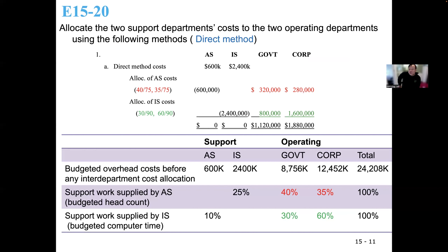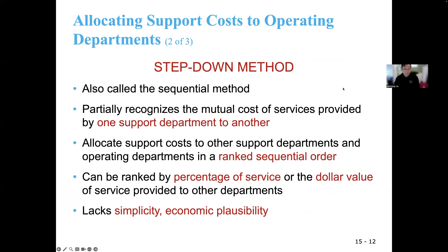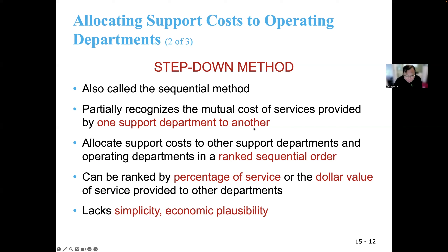This direct method is straightforward and simple to apply. The second approach is called the step-down method, also called the sequential method. The idea is we partially recognize the mutual cost of service provided by one support department to the other. You allocate support cost in a ranked sequential order. This one is more complicated.